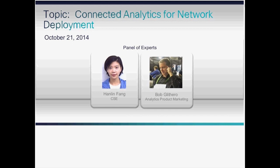Bob is a Product Marketing Manager in Cisco's Analytics Business Unit, where he focuses on analytics for network infrastructure, including CAN-D, and for collaboration. Prior to joining Cisco, Bob was a Marketing Director for a startup focused on machine learning in the cloud. He's also worked in the Telecom OSS BSS space at Portal Software, which is now Oracle Billing and Revenue Management, and previously at Nortel, and he began his career at Ernest & Young.